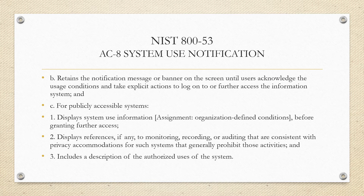The control also requires that use of the information system indicates consent to monitoring and recording, that the notification message or banner is retained on the screen until the user has acknowledged the usage conditions and taken explicit actions to log on, and for publicly accessible systems, displays system use information before granting further access — including references to monitoring, recording, or auditing consistent with privacy accommodations for such systems.